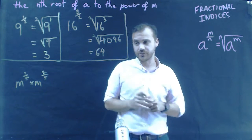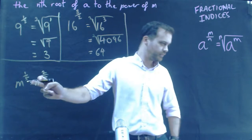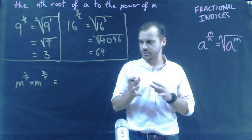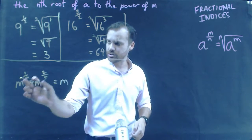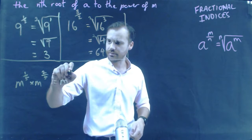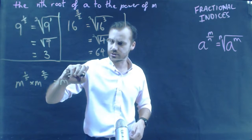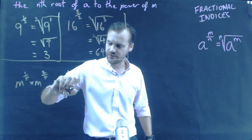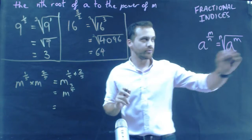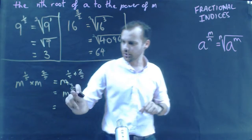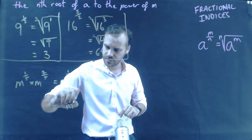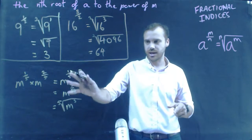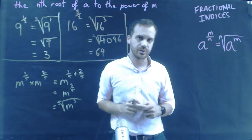Here I'm going to combine a couple of index laws: m to the one-fifth times m to the two-fifths. Using the index law for multiplying same bases, I add the exponents — one-fifth plus two-fifths — to get m to the three-fifths. Then using the fractional indices law, that's the fifth root of m cubed. I can't simplify further because it's algebra, so I won't get a number like the earlier examples.